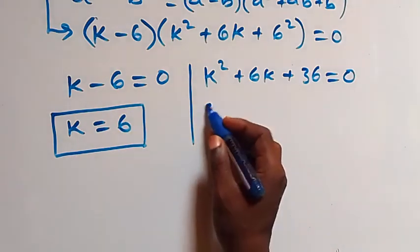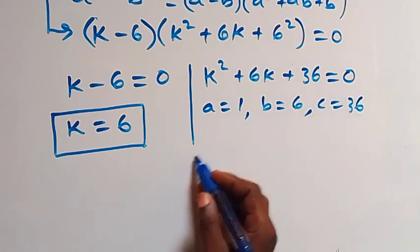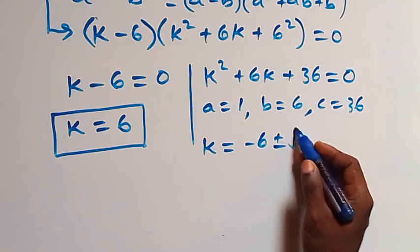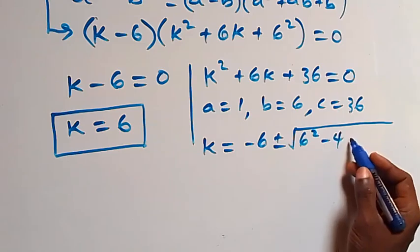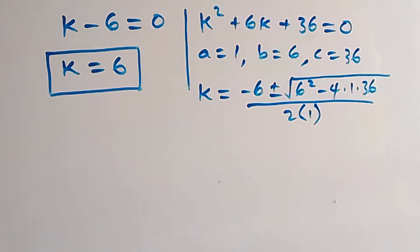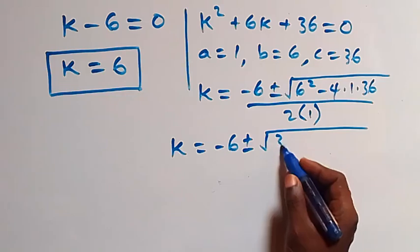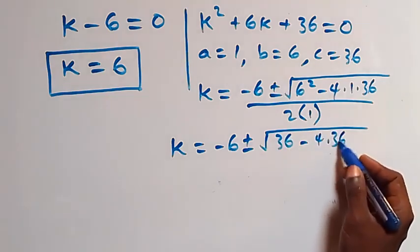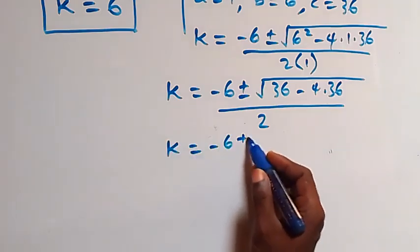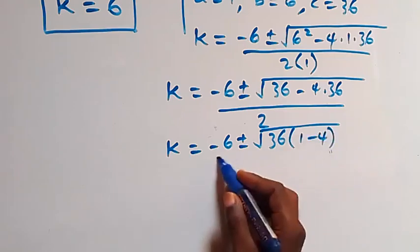Now here we have a quadratic equation where a equals 1, b equals 6, and c equals 36. Solving using the formula, k equals (minus 6 ± √(6² - 4×1×36)) / 2×1, which gives k equals (minus 6 ± √(36 - 144)) / 2, implying k equals (minus 6 ± √(36(1 - 4))) / 2, giving complex roots.